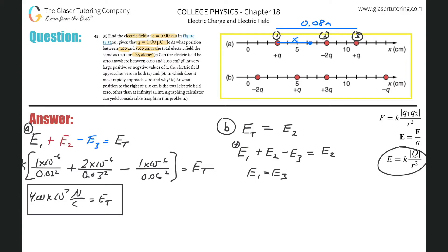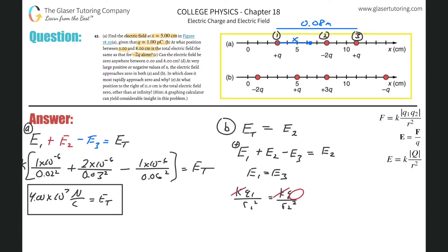Expanding: k·q1/r1² = k·q3/r3². The k's cancel. Q1 and q3 both equal q, so the q's cancel too. This reduces beautifully to 1/r1² = 1/r3², meaning r1 equals r3.